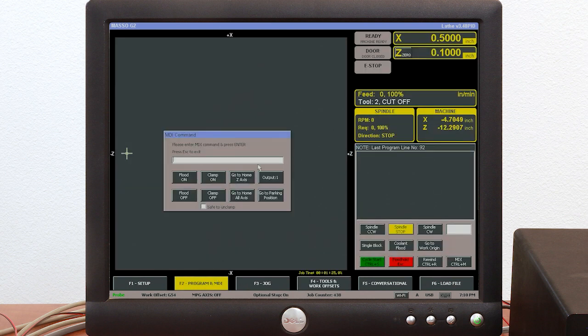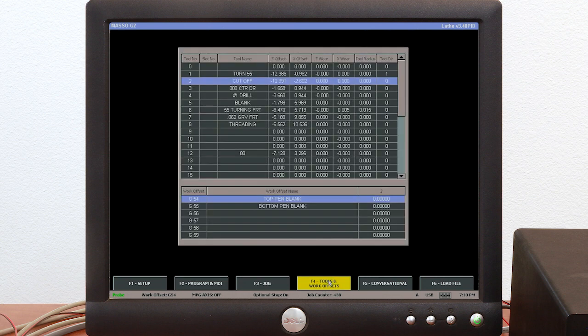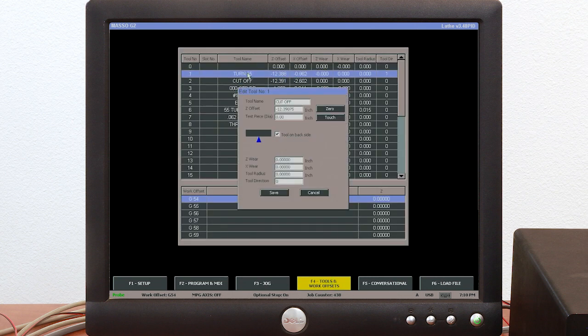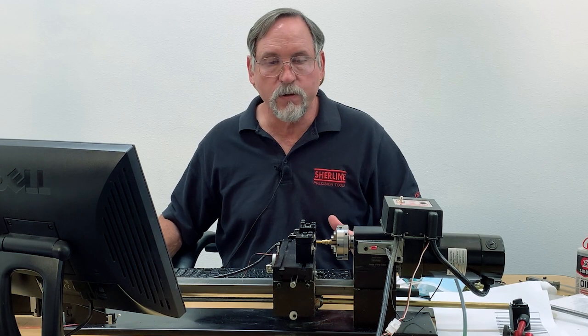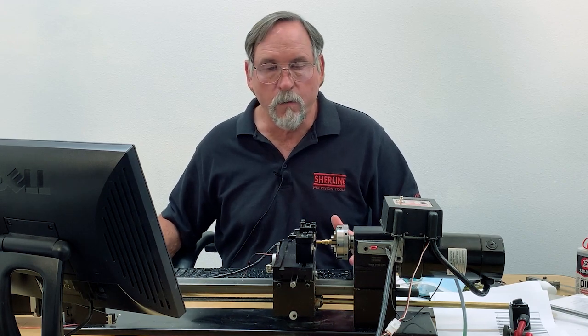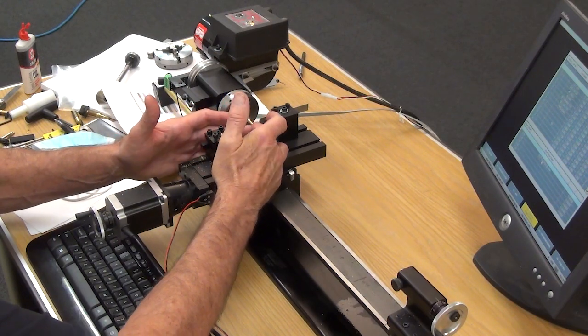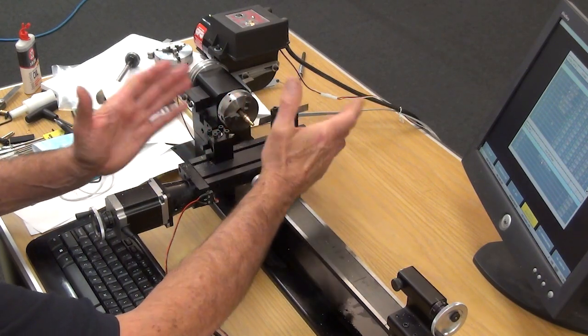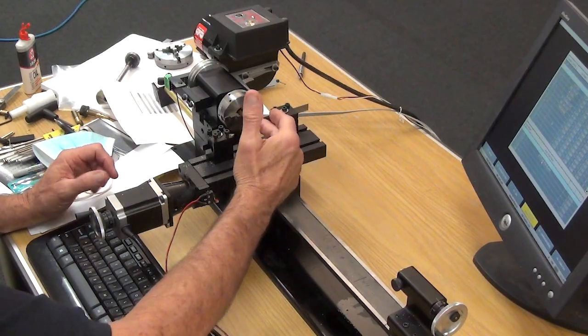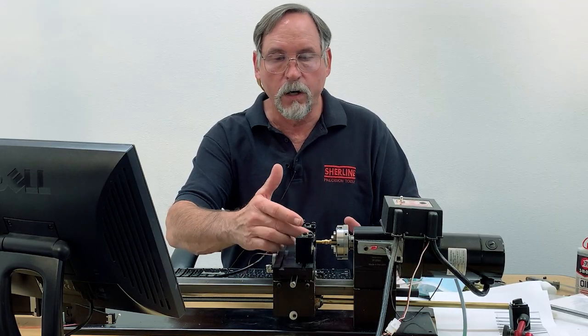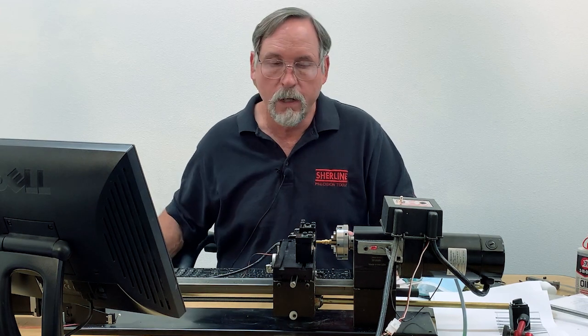Then if we go to tool number one, T1 M6, and we go to the tool data page and double click on that, you'll see where the arrow is on the front side showing that it's a front side tool. Masso does this so that no matter what side of the part your tool is on, all numbers in the X that are positive are going to move away from the center line for either tool. And negative moves in the program are going to move towards the center of the part.